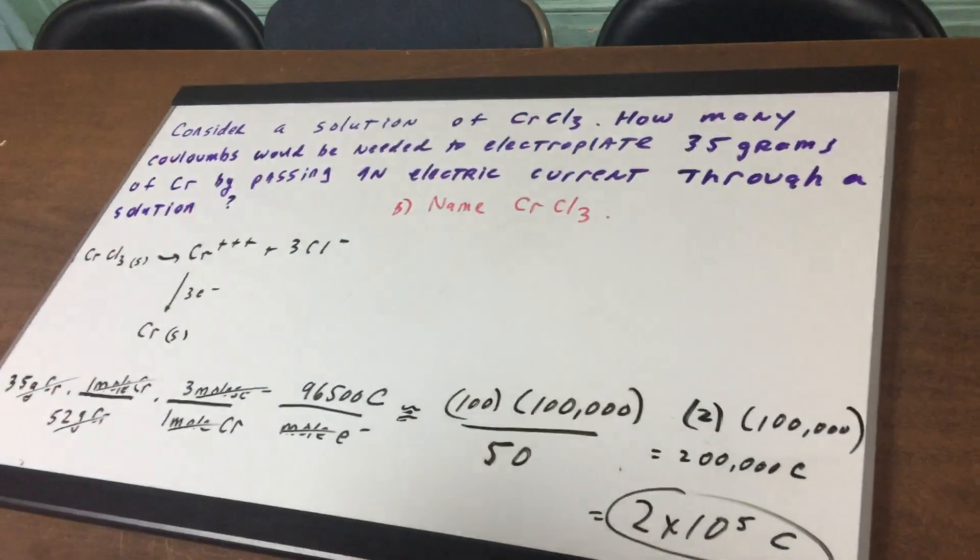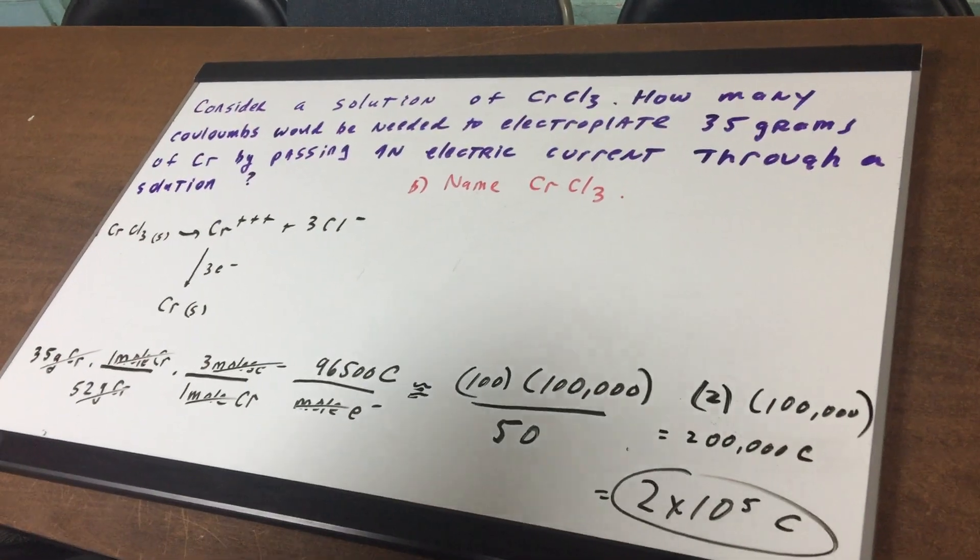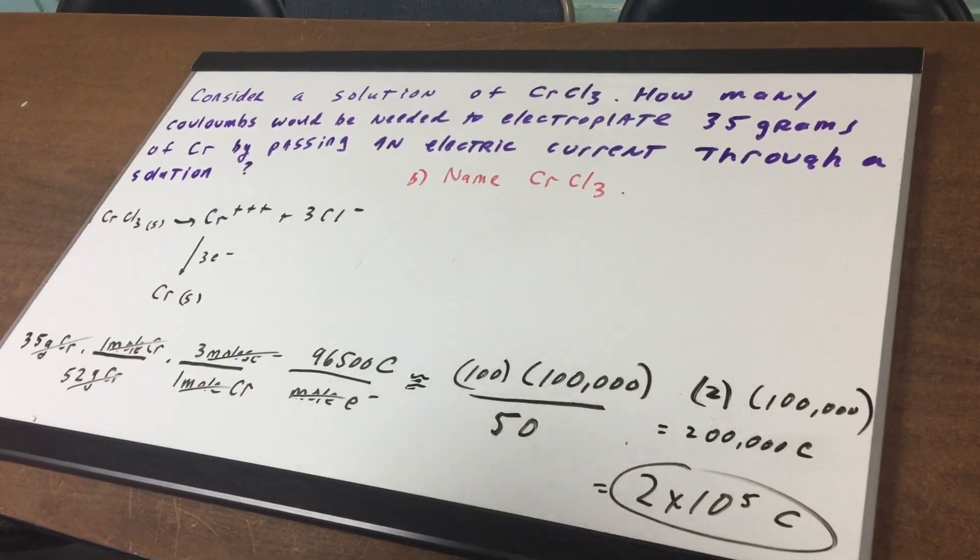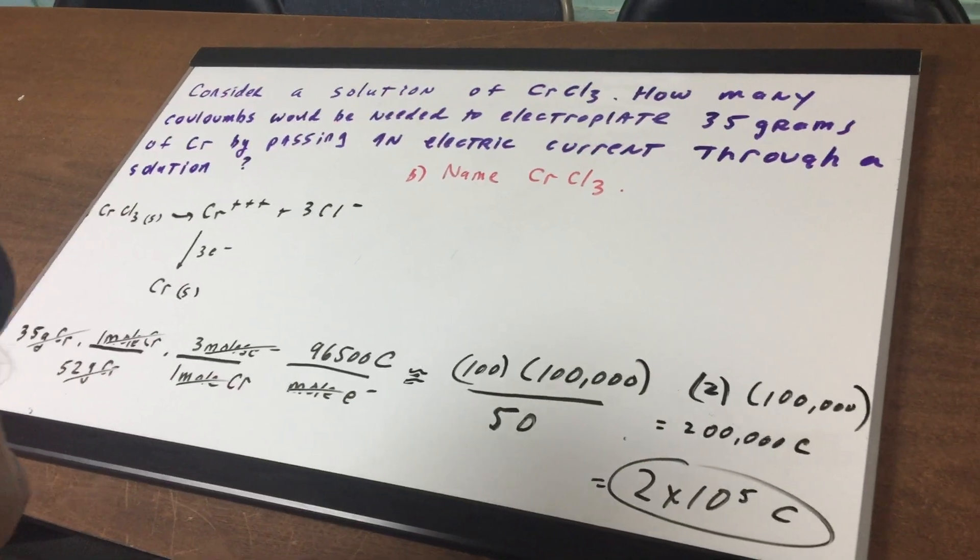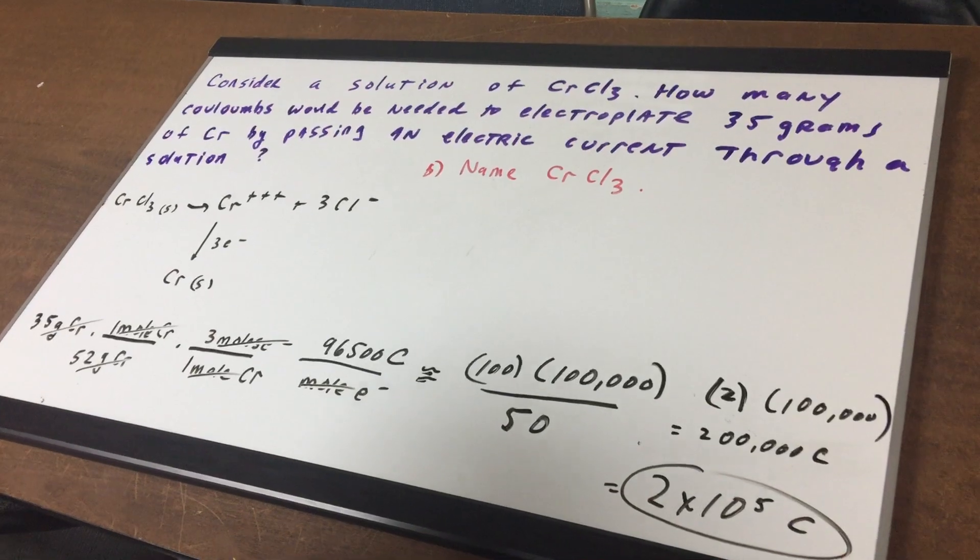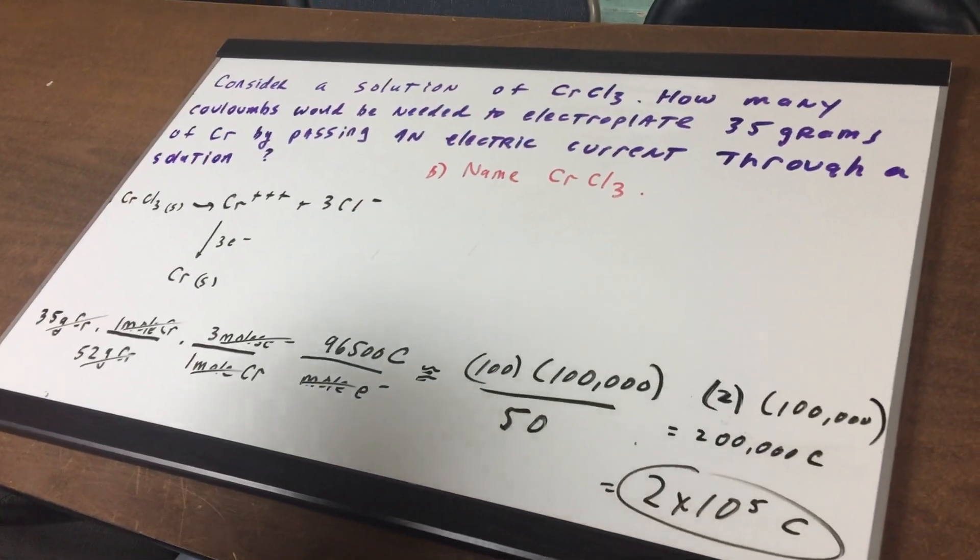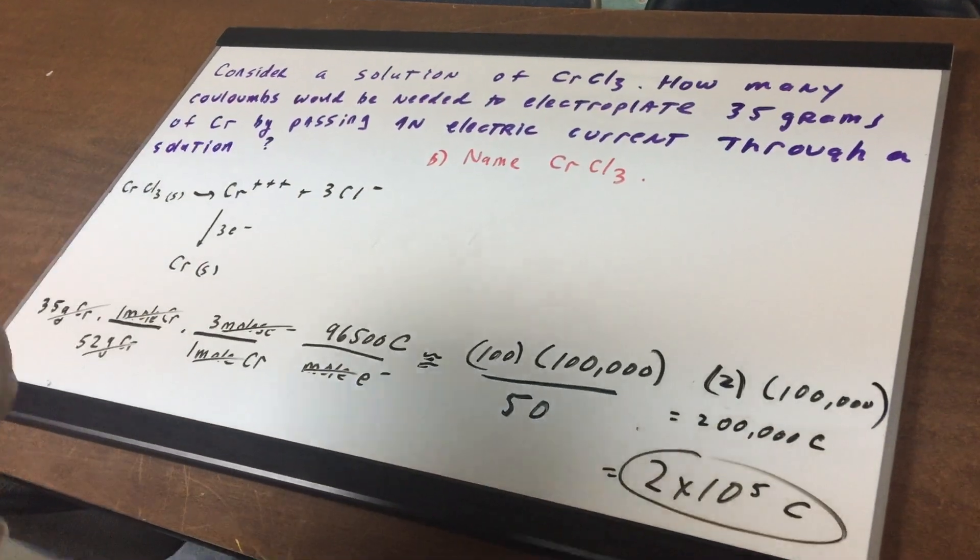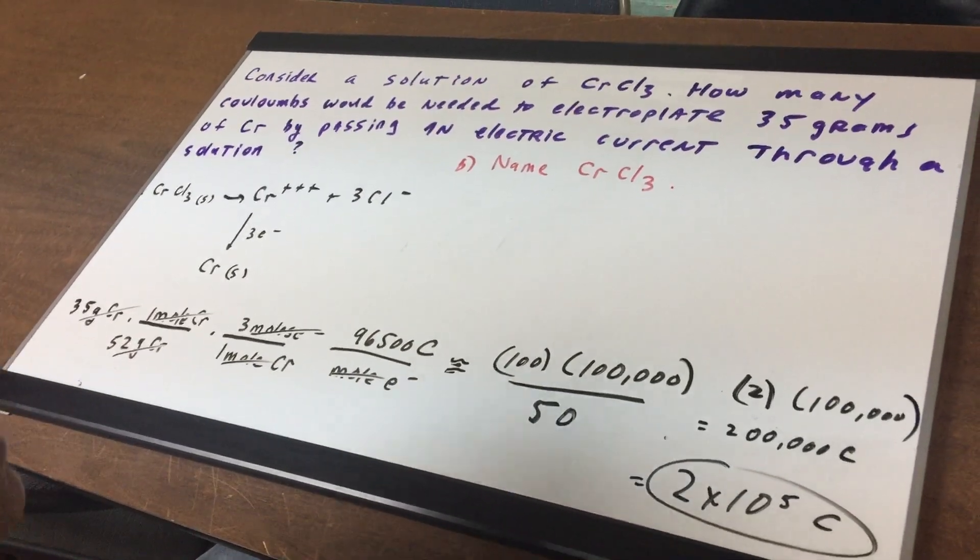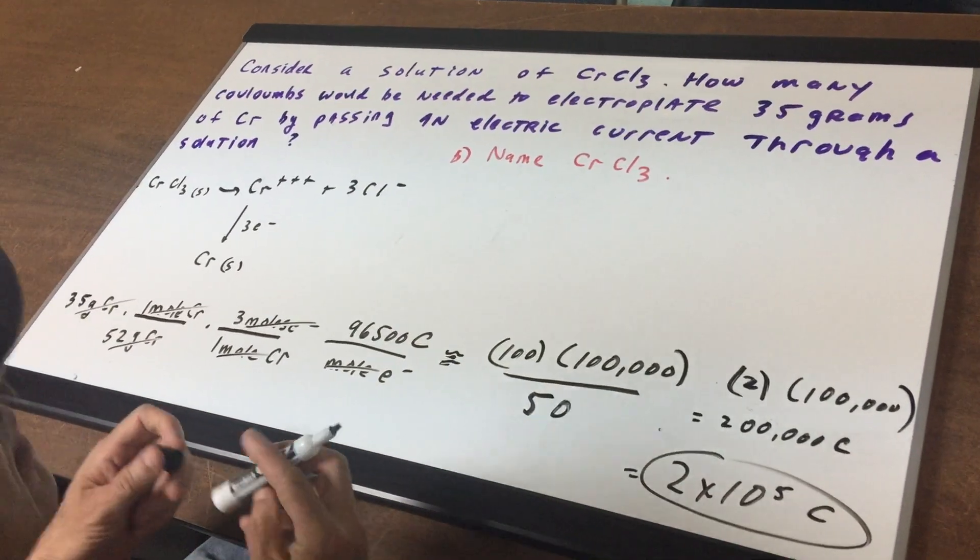Now it says consider a solution of CrCl3. How many coulombs would be needed to electroplate 35 grams of chromium by passing an electric current through a solution? And part B, name CrCl3. Why don't we do part B first?